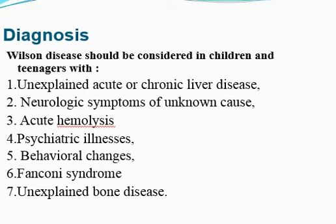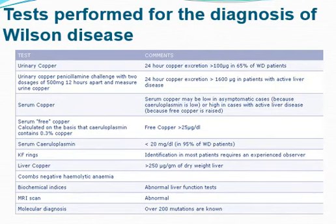Diagnosis should be considered if the child has unexplained acute or chronic liver disease, neurological manifestations, acute hemolysis, psychiatric illness along with behavioral changes, Fanconi syndrome, or unexplained bone disease. Tests for diagnosis of Wilson's disease include urinary copper level, serum copper level, serum ceruloplasmin level, KF rings, liver copper content, Coombs-negative hemolytic anemia, biochemical indices, MRI, and molecular diagnosis.